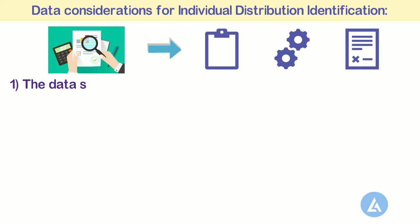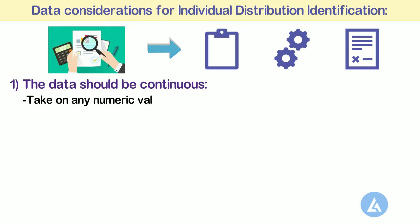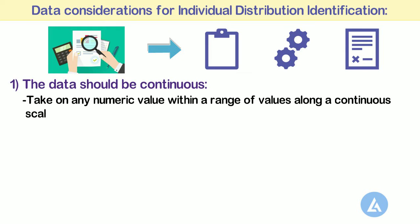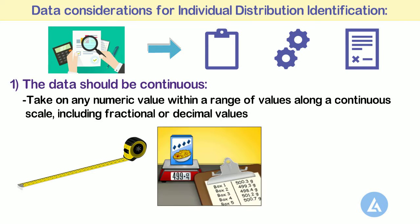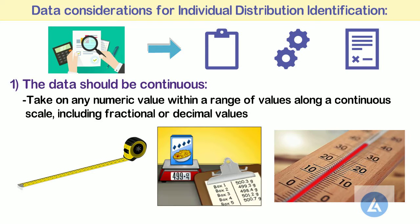1. The data should be continuous. Continuous data are measurements that may potentially take on any numerical value within a range of values along a continuous scale, including fractional or decimal values. Common examples include measurements such as length, weight, and temperature.